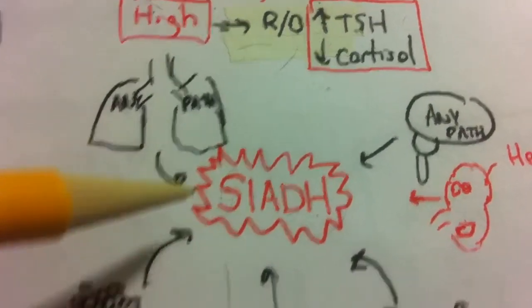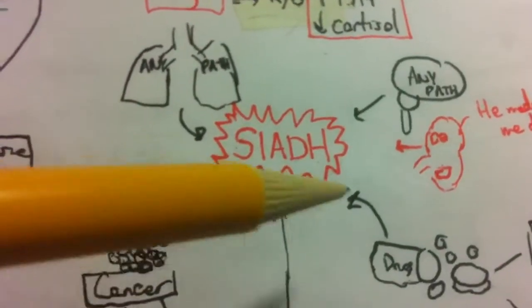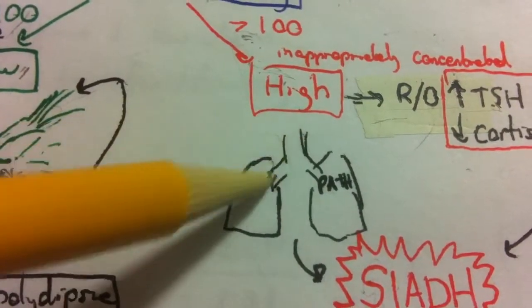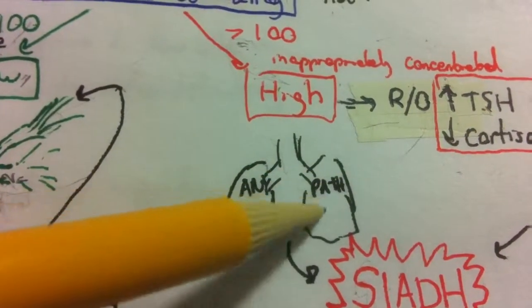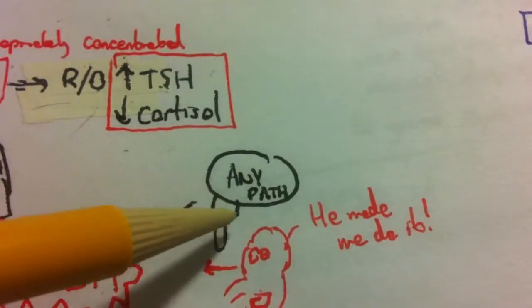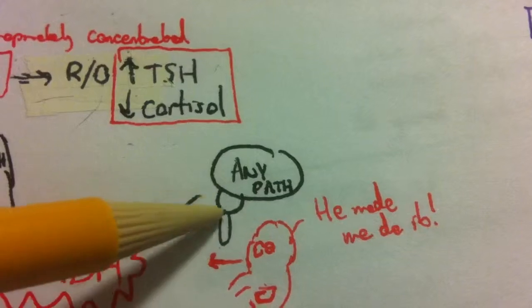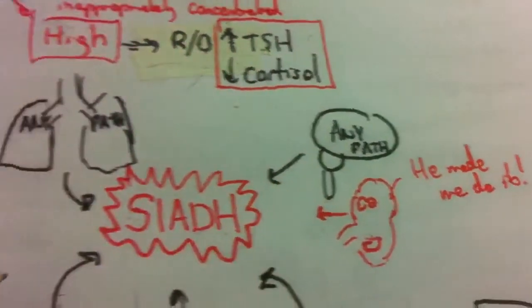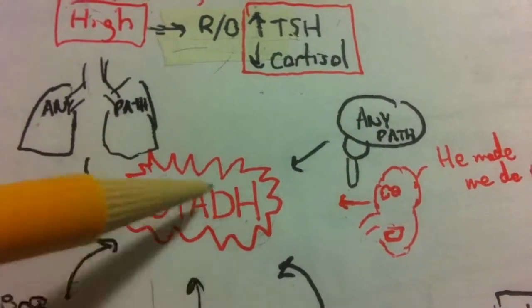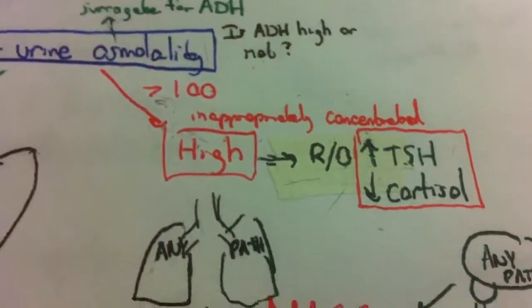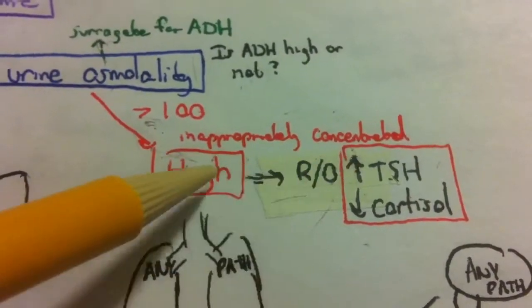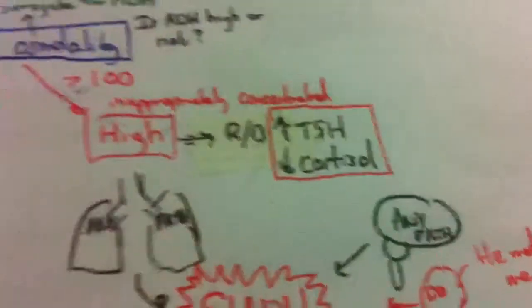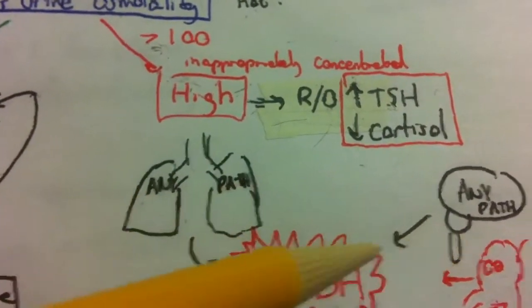Now, what causes SIADH? Well, I break it into five different categories here. So now you should recognize this. This is a beautiful drawing of your lungs. So any lung pathology. This is, you'll recognize the brain, any brain pathology. Now this is the kidney. You're recognizing the kidney, right? He's saying he made me do it. So the kidney is blaming the inappropriate excretion of antidiuretic hormone on the fact that it is inappropriately concentrating the urine.